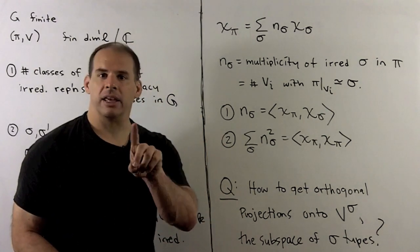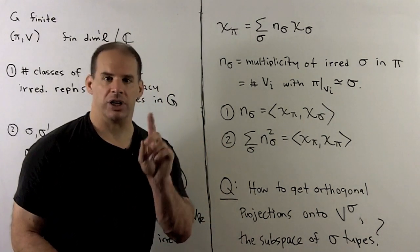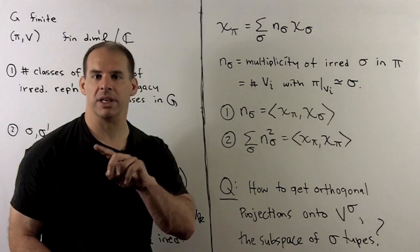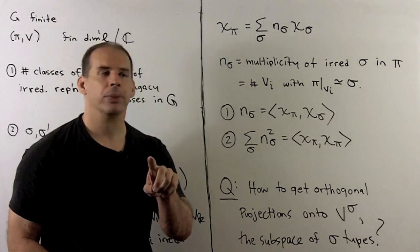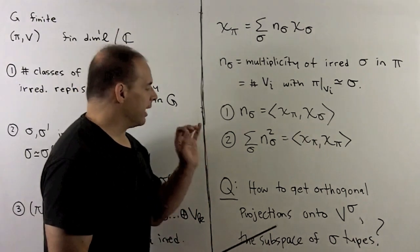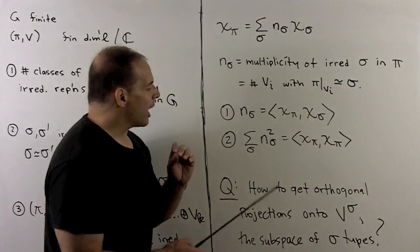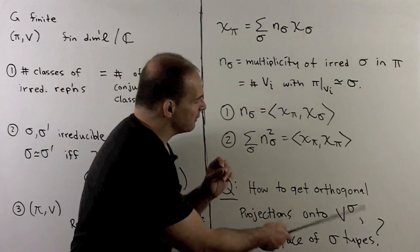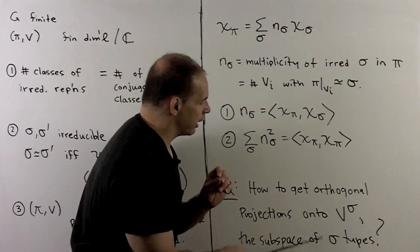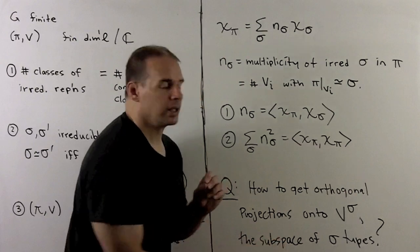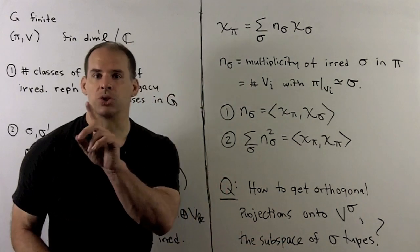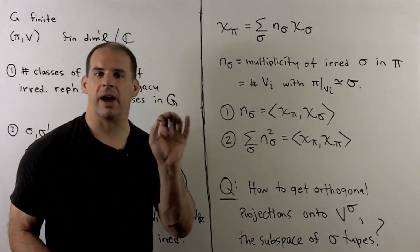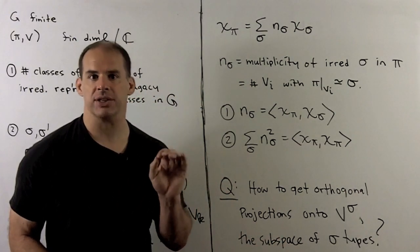That leaves the question: once we know all the irreducible types and their multiplicities, how do we get to them? How do we get the orthogonal projections onto each space of irreducible types? The story here is going to be very close to the story for the finite abelian case.